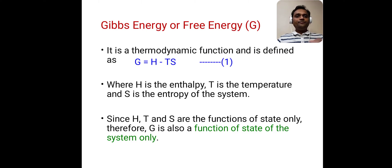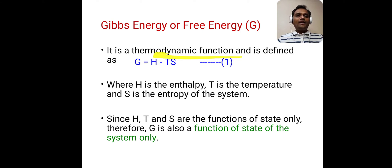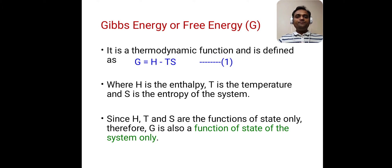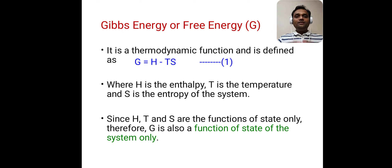Gibbs Energy, also called Free Energy or Gibbs Free Energy, is denoted by capital G. It is a thermodynamic function defined as G is equal to H minus TS. This is the definition of Gibbs Free Energy: G = H - TS.